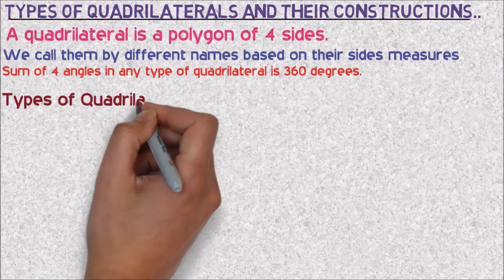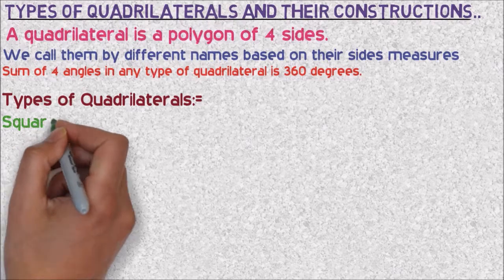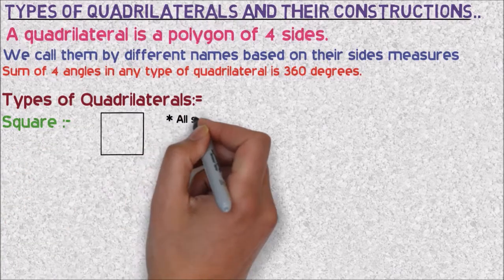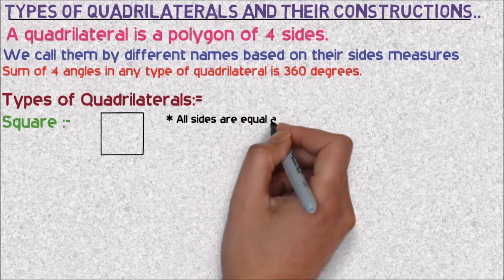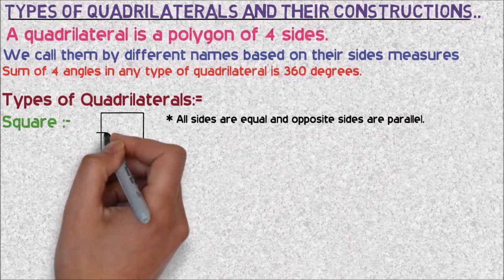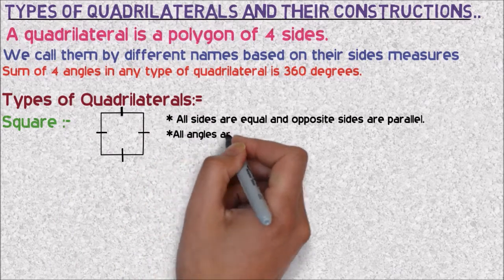Let's see the types of quadrilaterals. First, we see the square. Here, all sides are equal and opposite sides are parallel, and all angles are equal and each measures 90 degrees.